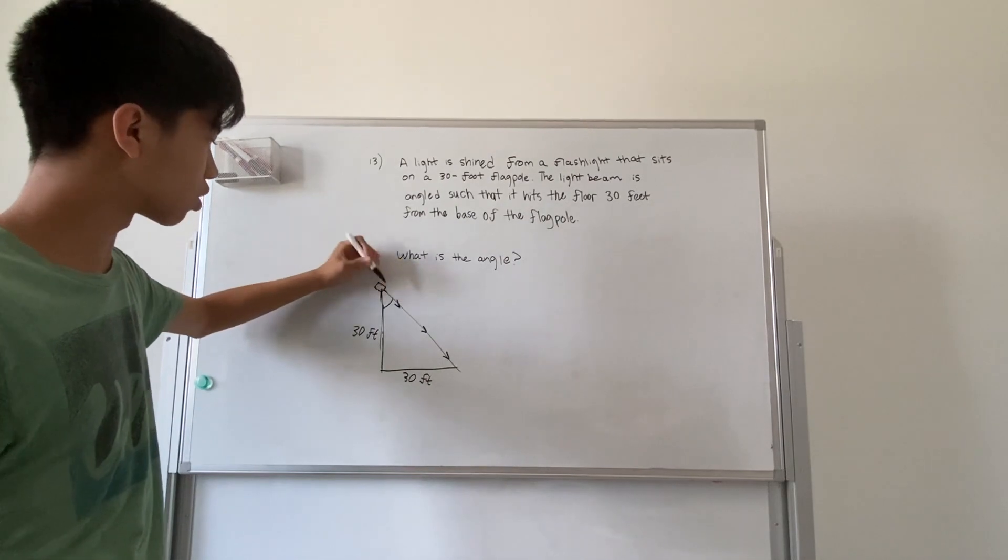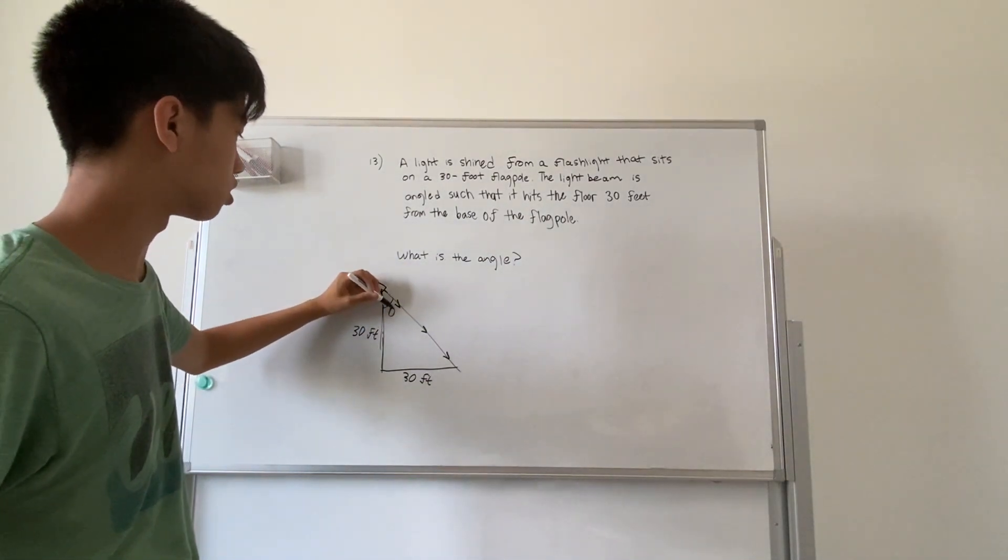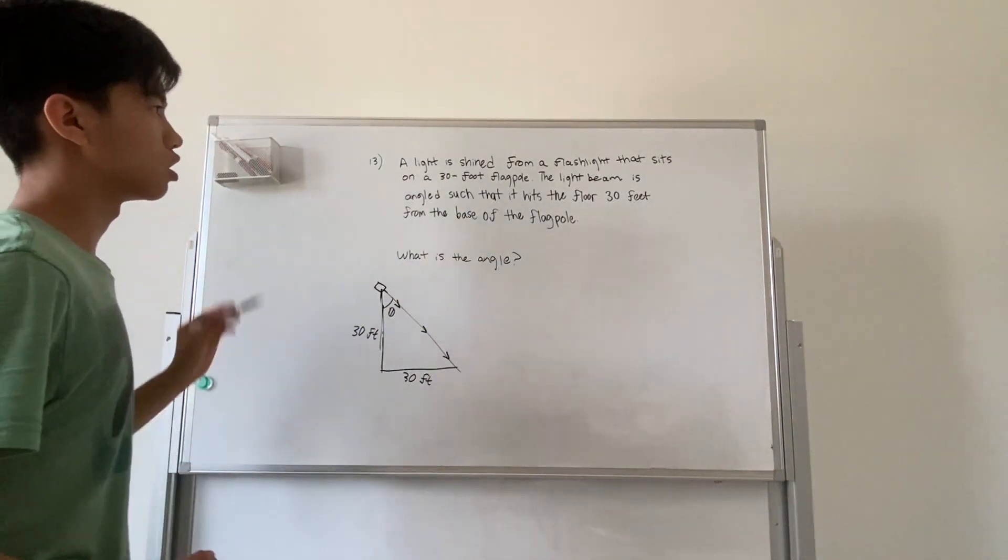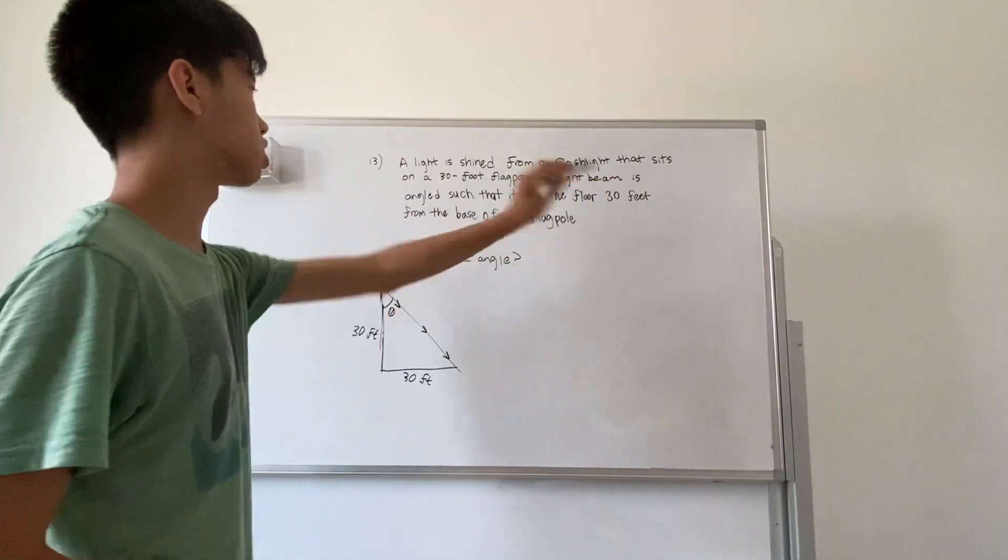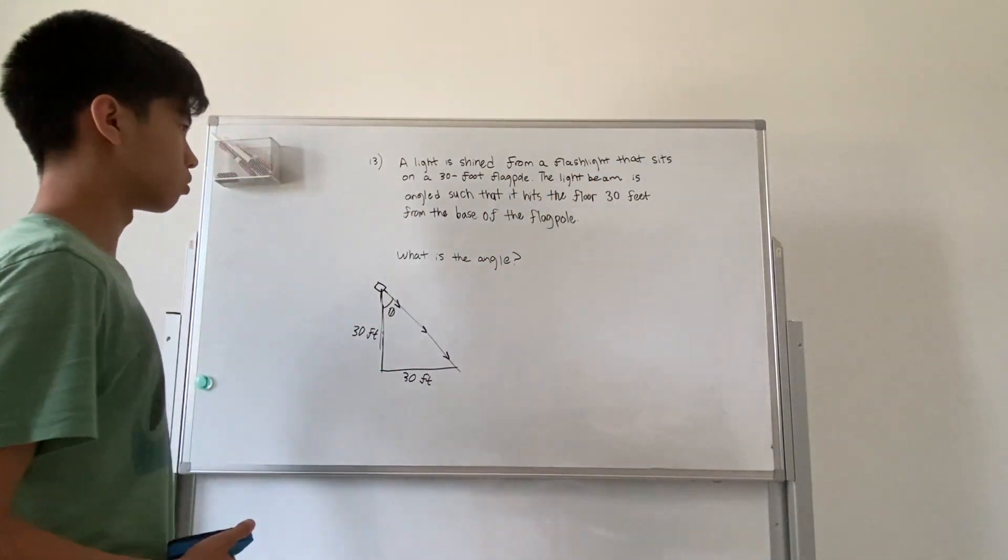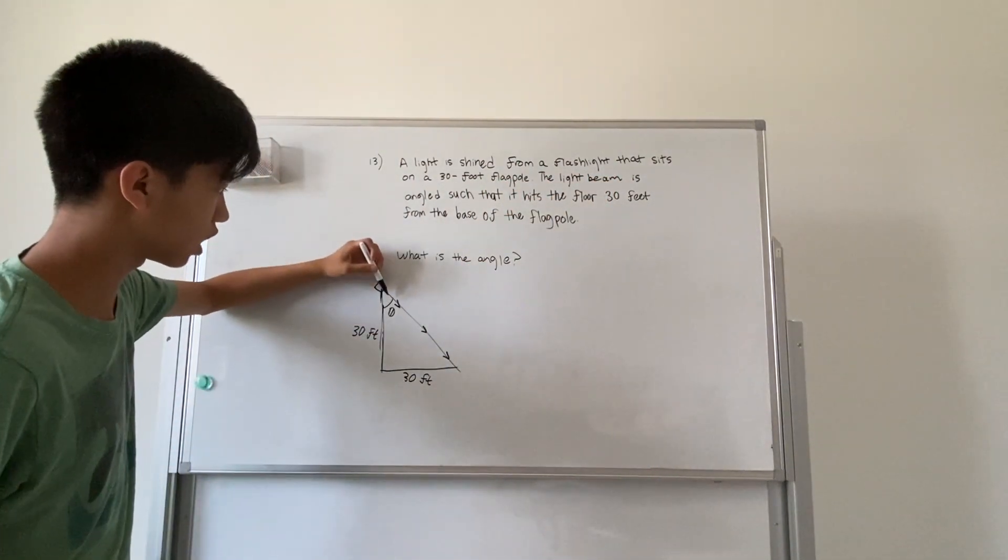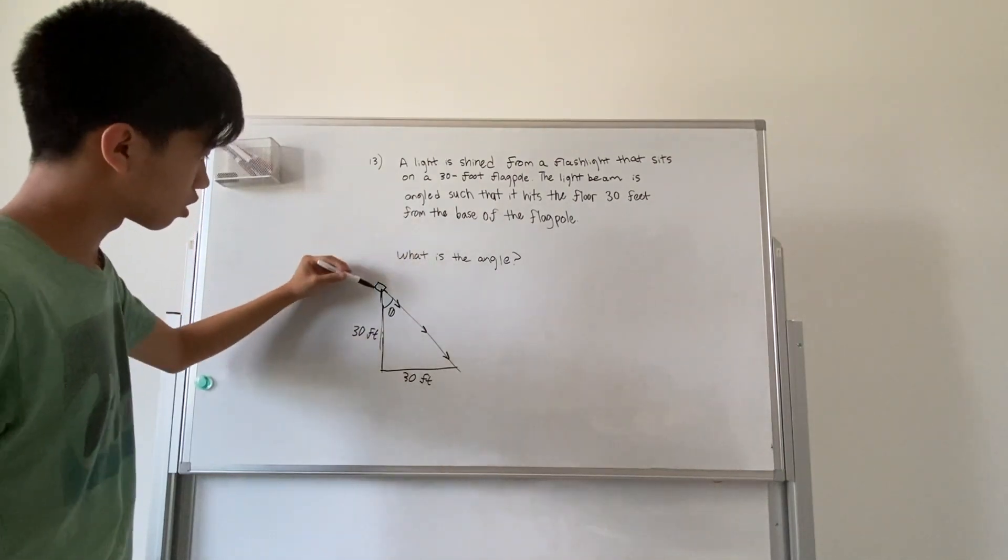The angle we're talking about is theta, because they say the light beam is angled such that it hits the floor 30 feet from the base. So they're talking about an angle from the vertical.